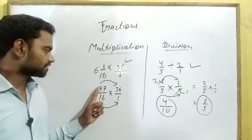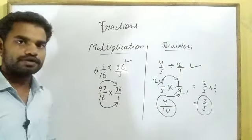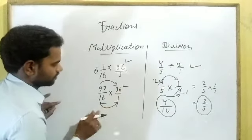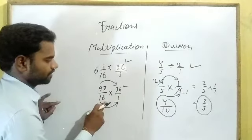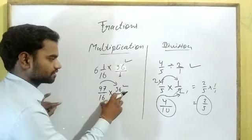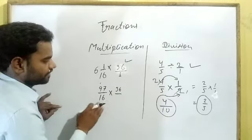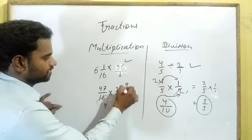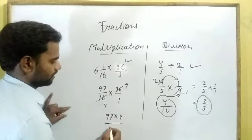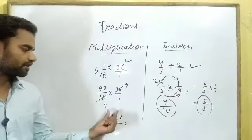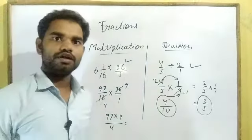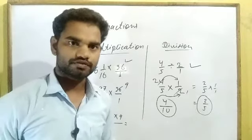Before performing the multiplication, first of all check numerator to denominator whether any numbers can be cancelled by a common number. We see 16 and 36 are both even numbers and can be cancelled by 4. So: 4 into 4 is 16, 4 into 9 is 36. These two numbers are cancelled by 4. Now the numerator is 97 × 9 and the denominator is 4 × 1, which is 4. 97 × 9 is 873. 873 divided by 4 gives a quotient and a remainder. To write this improper fraction as a mixed fraction: the whole number part is the quotient, the remainder is the numerator, and 4 is the denominator. So the answer is 218 whole 1 upon 4.